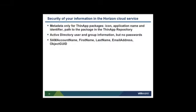Regarding security: the on-premise Horizon connector collects information about Active Directory users and groups and about ThinApp packages and transmits that information to the Horizon service in the cloud. The ThinApp package information is metadata only — icon, application name and identifier, and path to the package in the ThinApp repository. The ThinApp packages themselves never leave the repository, and the Horizon service communicates with the connector, not directly with the ThinApp file share. Sensitive Active Directory information is stored encrypted on the connector, and the connector does not send passwords to the Horizon service. Selected Active Directory user attributes synchronized include SAM account name, first name, last name, email address, and object GUID. Group names and group object GUIDs are also sent to the service.